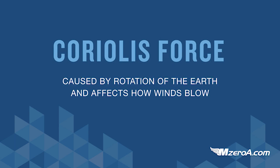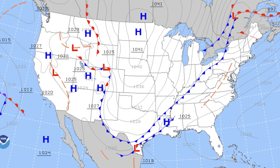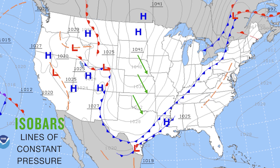Next, the Coriolis force. The Coriolis force is caused by the rotation of the Earth and affects how winds blow. In the northern hemisphere, the Coriolis force causes the wind to flow at right angles. Higher up — let's say even just 2,000 feet — the winds flow parallel to the isobars, which are the constant lines of pressure in the atmosphere. The closer the isobars are, the greater the pressure gradient; the greater the pressure gradient, the stronger the winds. Winds are weaker at the surface due to surface friction — the buildings, trees, everything else working to slow the winds down.